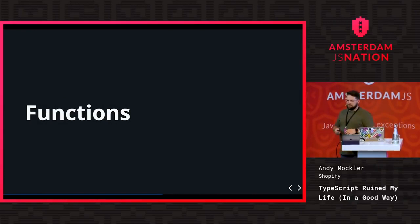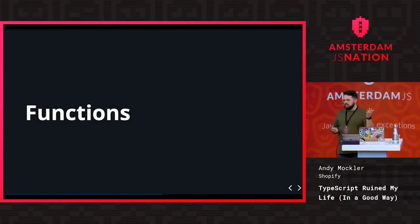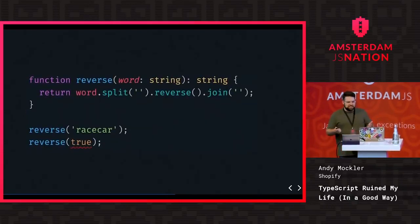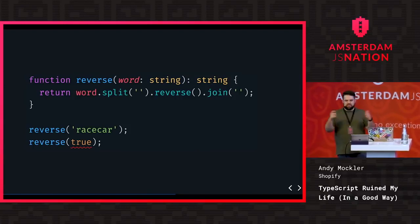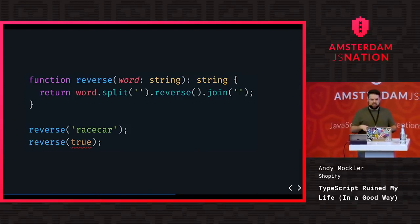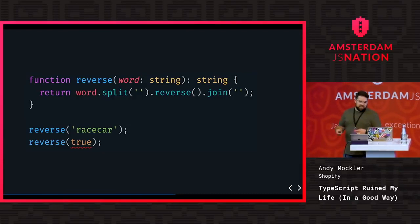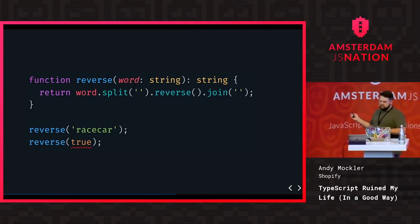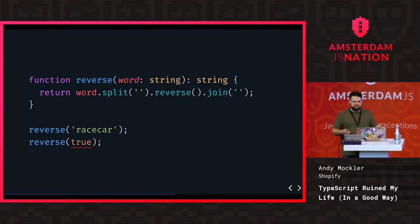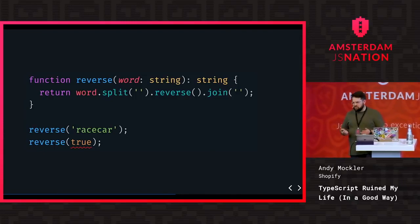Functions are where it gets really interesting. When writing modules with imports and exports, it's harder to remember what a function takes and gives back. Here we have a reverse function where word is typed as a string, with a return type annotation. If I try to reverse a race car string it's happy, but if I try to reverse a boolean it's going to be upset with me.